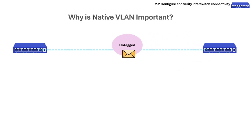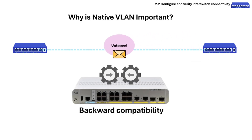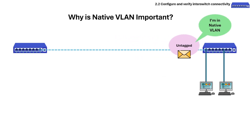Why is native VLAN important? It allows backward compatibility with older devices that do not tag VLANs. It also provides a default VLAN for traffic that isn't tagged with a specific VLAN ID, ensuring it still gets routed correctly across the trunk link.